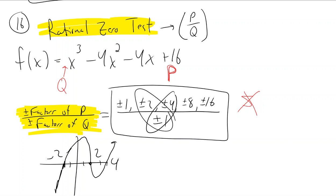So not everything in this list is a zero, but everything in this list is the only possible rational zeros. No other rational number could possibly be a zero for this function.